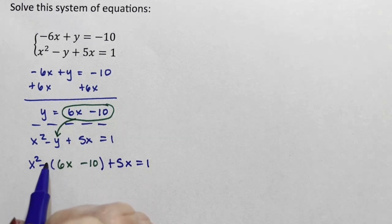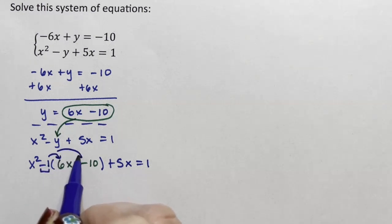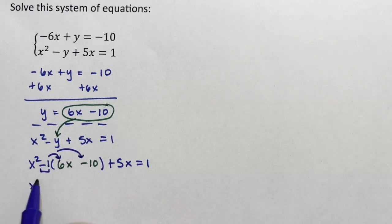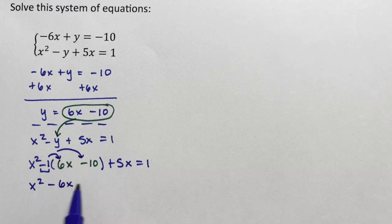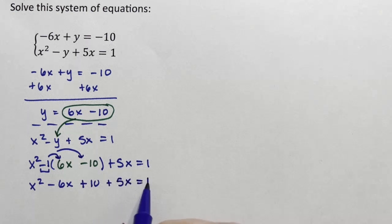Now, when I distribute, there's an implied 1 here, and this negative 1 needs to multiply into both items of the parenthesis. So I have x squared minus 6x plus 10, negative times a negative is a positive, plus 5x equals 1.